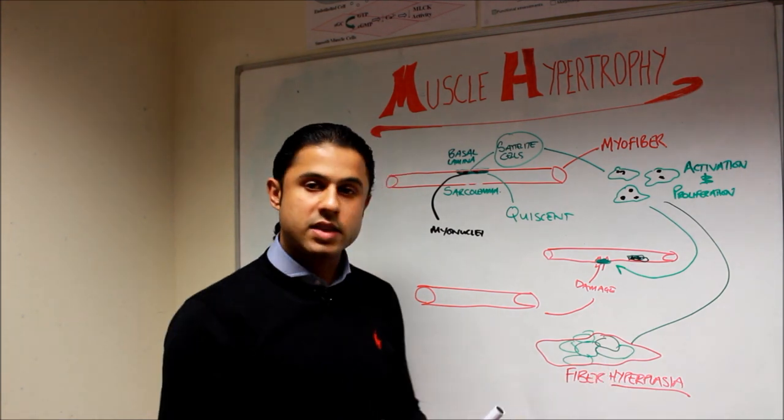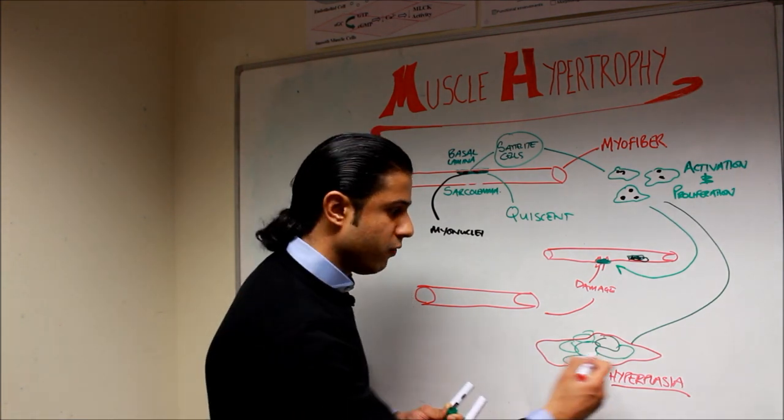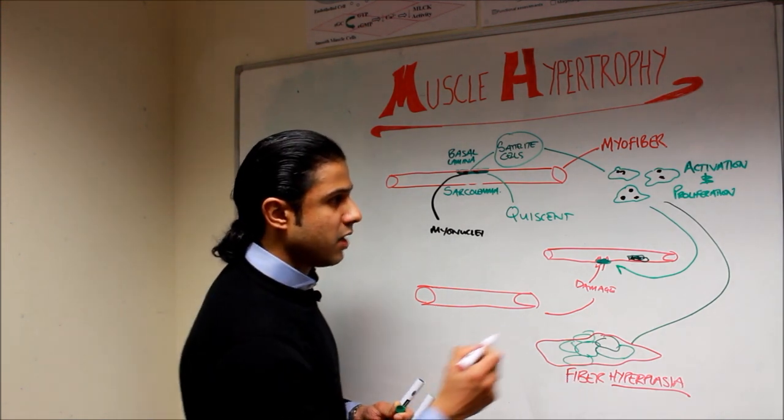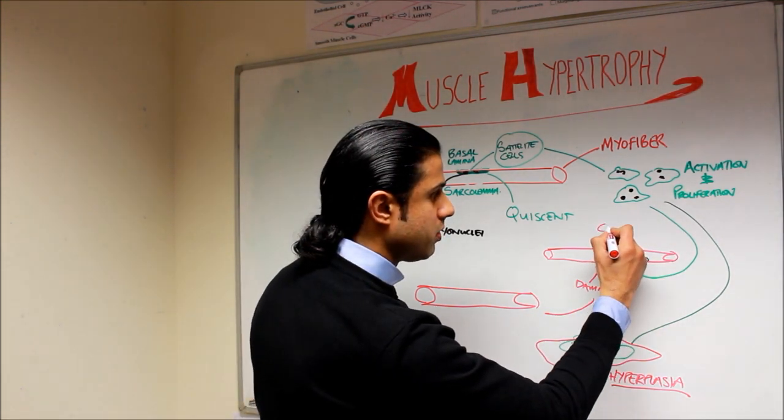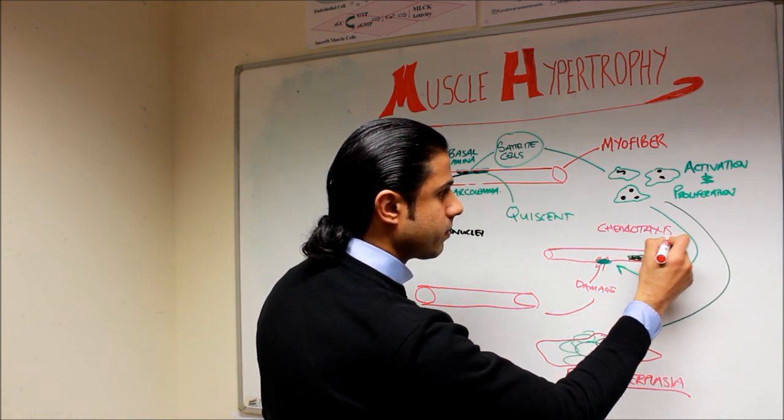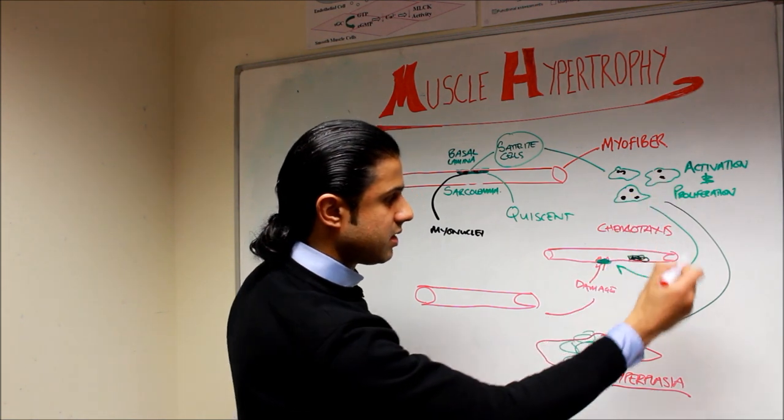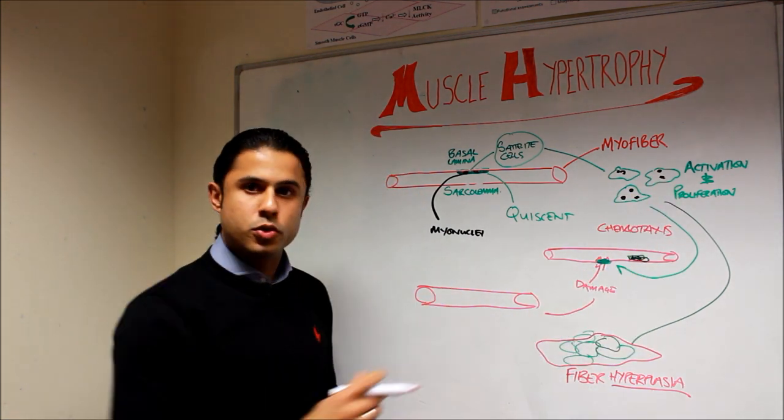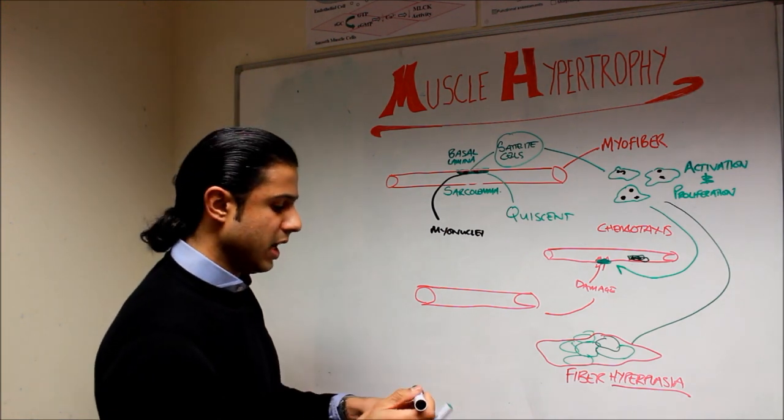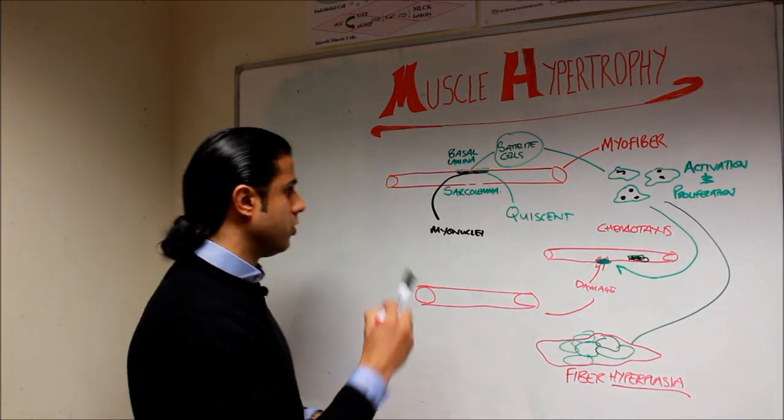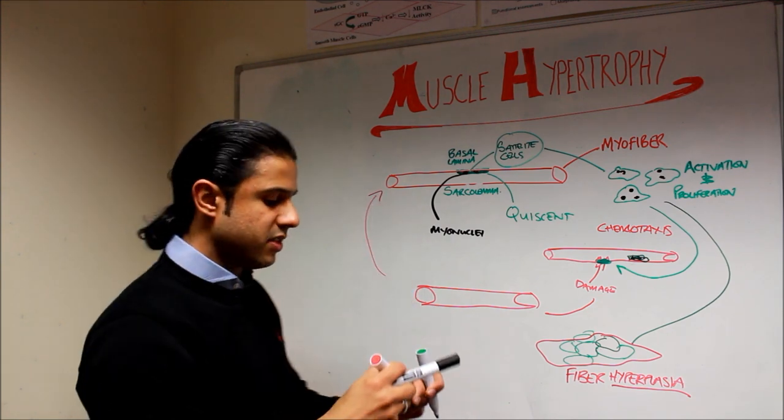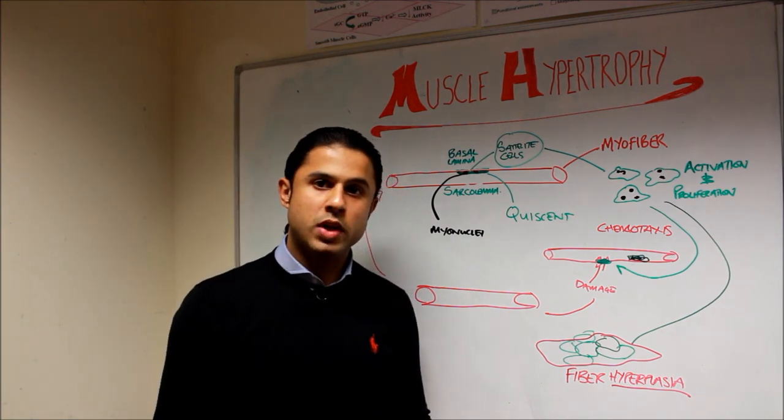chemotaxis of the activated satellite cells to a damaged site to cause the myofibers to actually regenerate and come back stronger. Obviously that cycle then starts again. You end up in this position here, you then start to get further damage to the muscle fibers as you do resistance training and the whole process starts again.